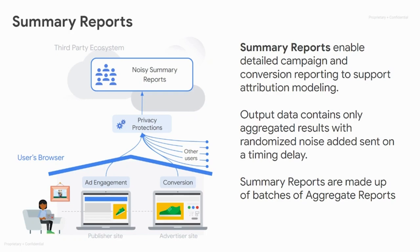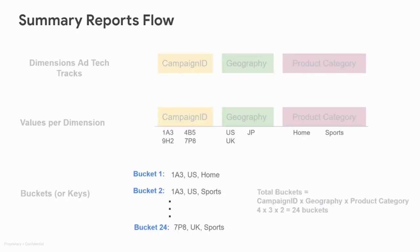In this next slide, we will see how a summary report is constructed from multiple aggregate reports and what that flow from an ad tech and user perspective looks like. Aggregate reports are made up of buckets, which are dimensions an ad tech wants to track, and values, which are various values an ad tech also wants to track.